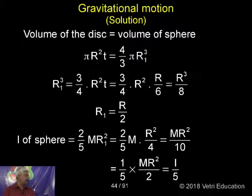So r1 is equal to r by 2. The moment of inertia of a sphere is 2 by 5 m r1 square. Substitute this, we can get i by 5.